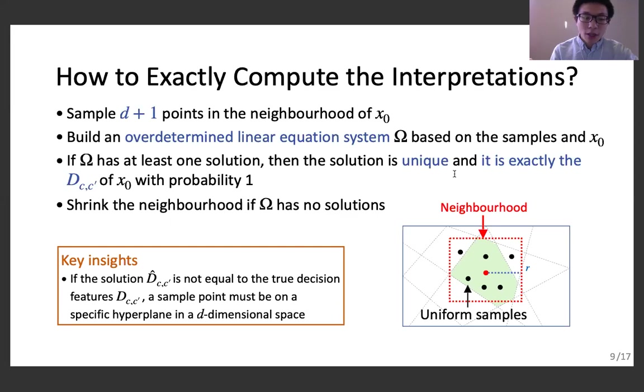If the equation system does not have a solution, which means the sampled points cannot come from the same locally linear region, then we should shrink the neighborhood. We repeat the above steps until the system has a solution. At that time, all sampled points satisfy the same locally linear classifier, and the solution of the system is exactly the true decision feature.